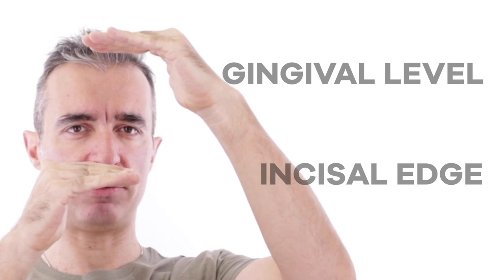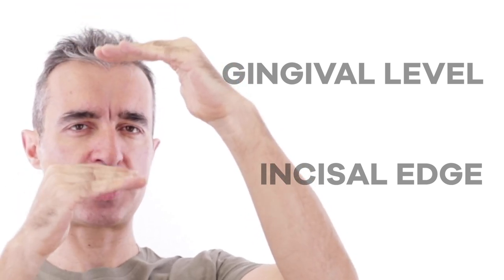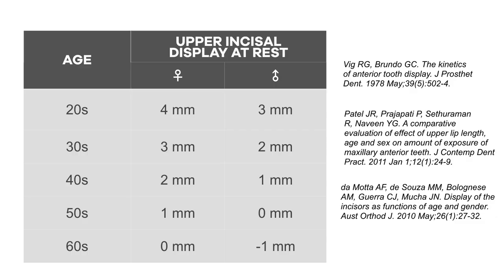When thinking about the vertical position of the central incisor, we are thinking about two things: the incisal edge position and the gingival levels. When we define these two, we define not only their vertical position but also the tooth size. For the incisal edge position, we consider the patient at rest with the upper lip at rest. If we gather data from different studies, we can see that for each decade that goes by, we tend to show one millimeter less of incisal edge display. Men, for the same age group, show on average one millimeter less than women.